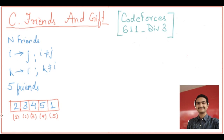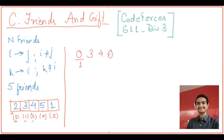In the question, person one gave the gift to second, second gave to third, third to four, fourth to fifth, and fifth to one. But some places in this sequence are unknown, denoted by zero — meaning this person does not know to whom they should give the gift. We have to fill these places and output an answer that does not violate any condition.